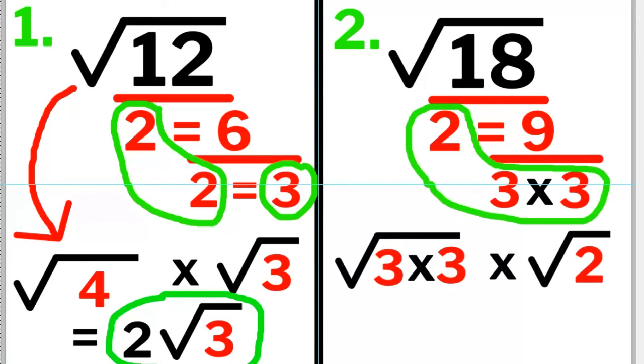Now we have a 2 and two 3's. Thus, we have the square root of 3 times 3 times the square root of 2. 3 times 3 equals 9, so we have the square root of 9 times the square root of 2.